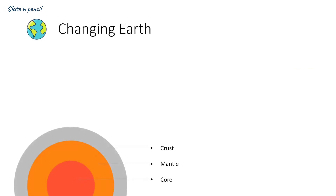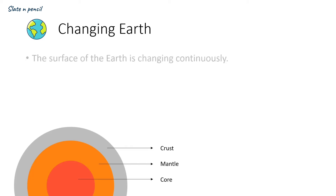Before starting this chapter, we would like to understand the layers of the Earth. There are three basic layers: core, mantle, and crust. Core is the innermost layer of the Earth and it is hot and solid. Mantle is the middle or second layer of the Earth and it is in molten state. Crust is the third or uppermost layer of the Earth, and that is where we live. It is lighter and it floats on the mantle.